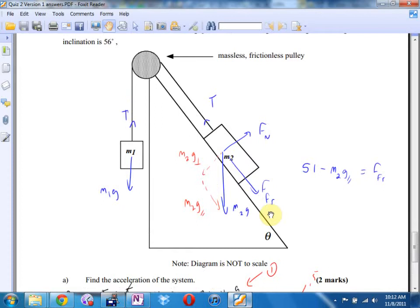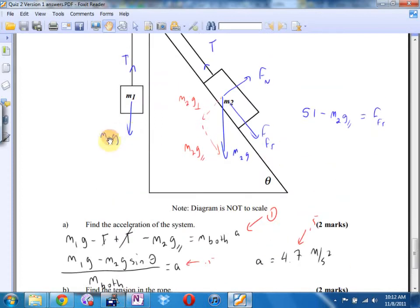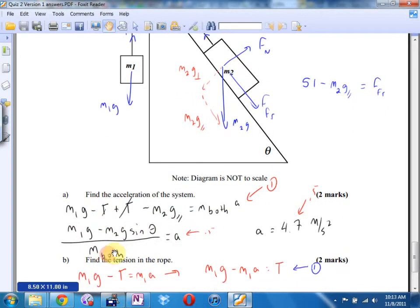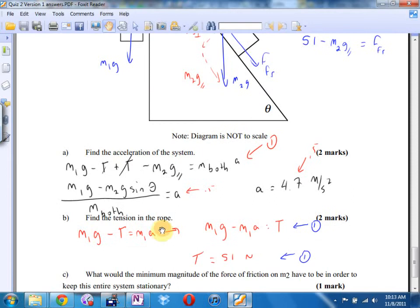I said M1G is winning, tension losing, tension winning, and M2G parallel is losing. Winner minus loser plus winner minus loser equals the mass of both of them times A. Tensions cancel. M1G, M2G parallel was M2G sine. I divided by the mass of both of them to get the A by itself, and I got 4.7 meters per second squared. Then to find tension, I could have used this mass, but this mass is much cleaner. M1G is winning, tension is losing equals M1A, and tension was 51 newtons.